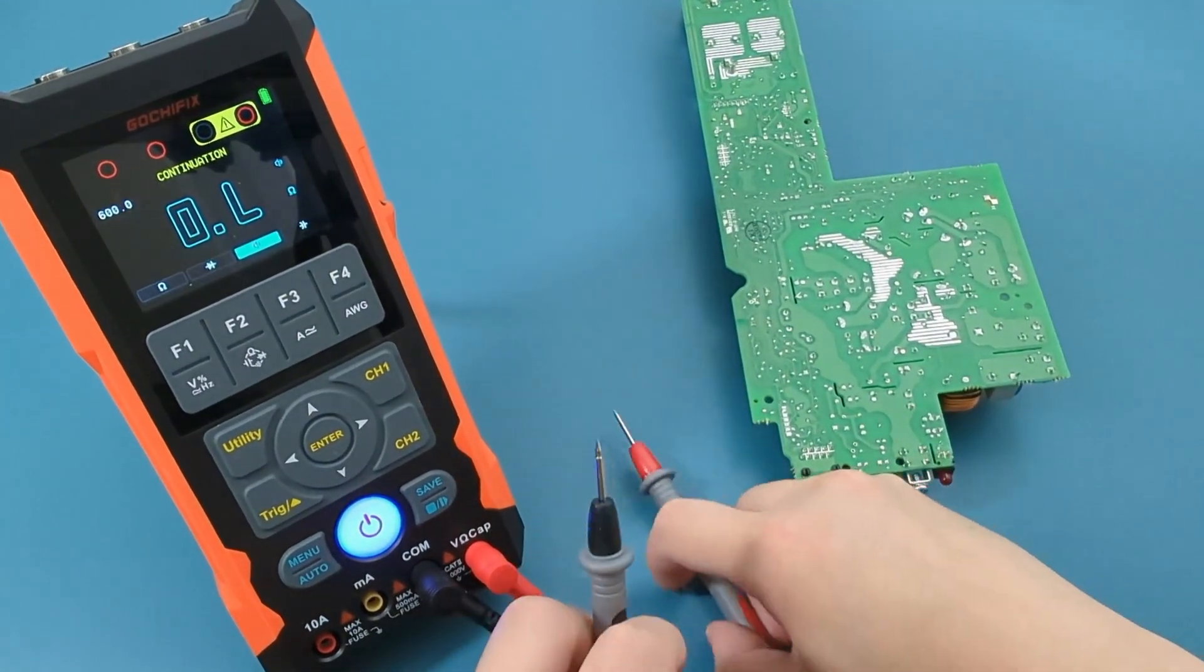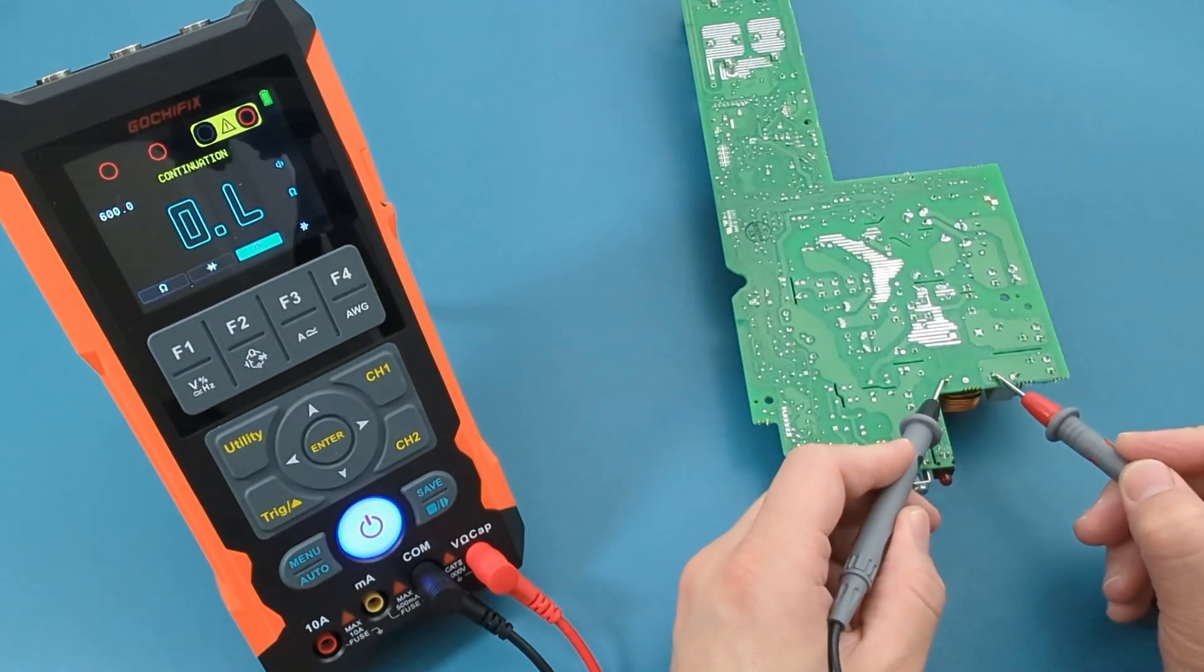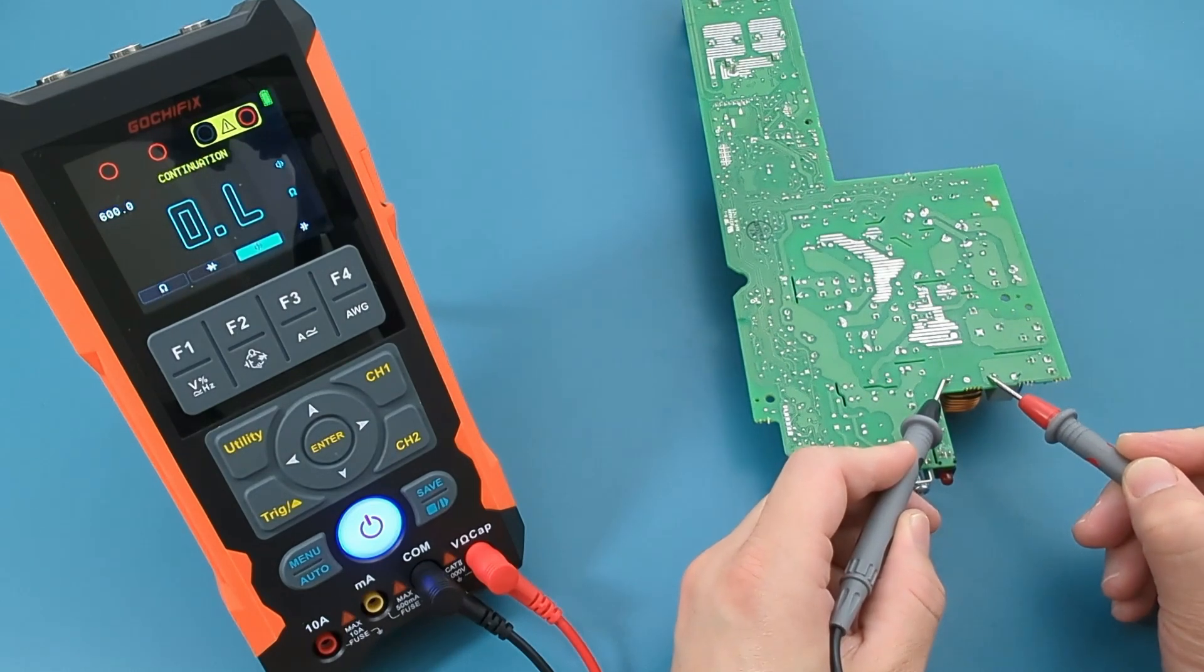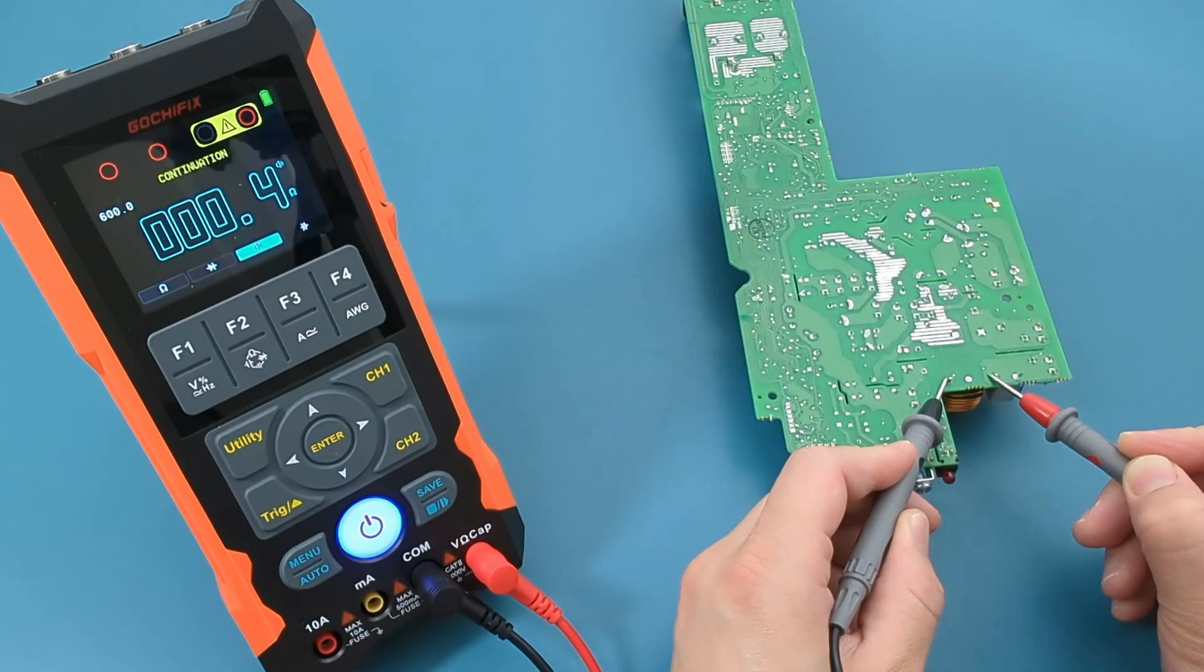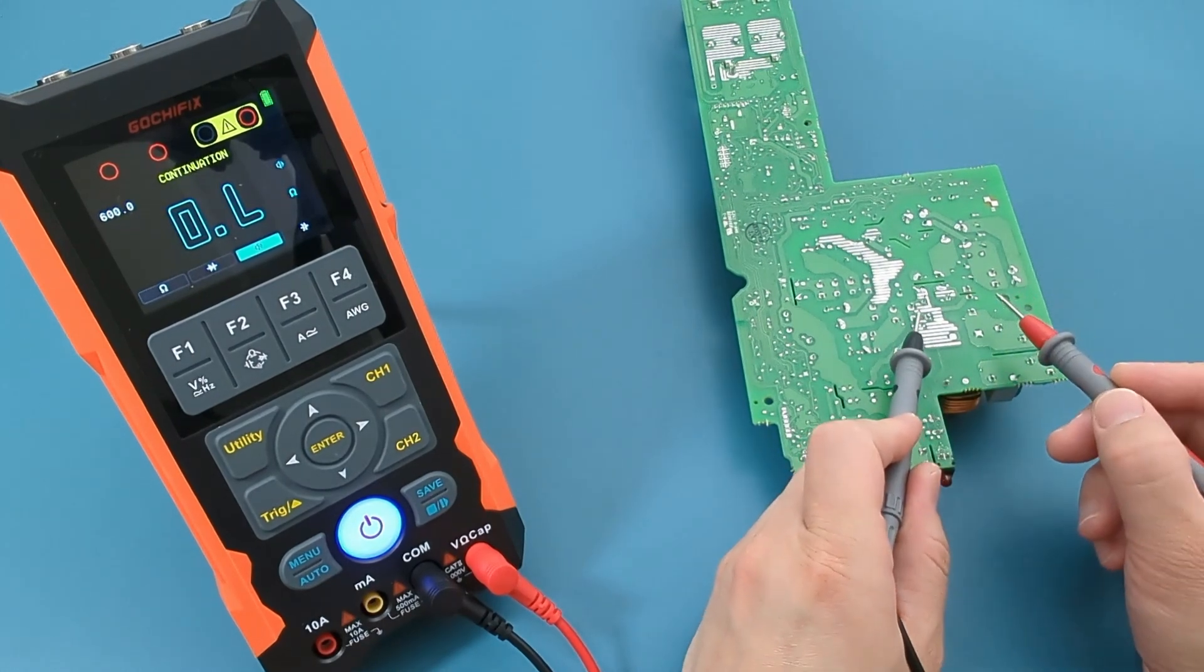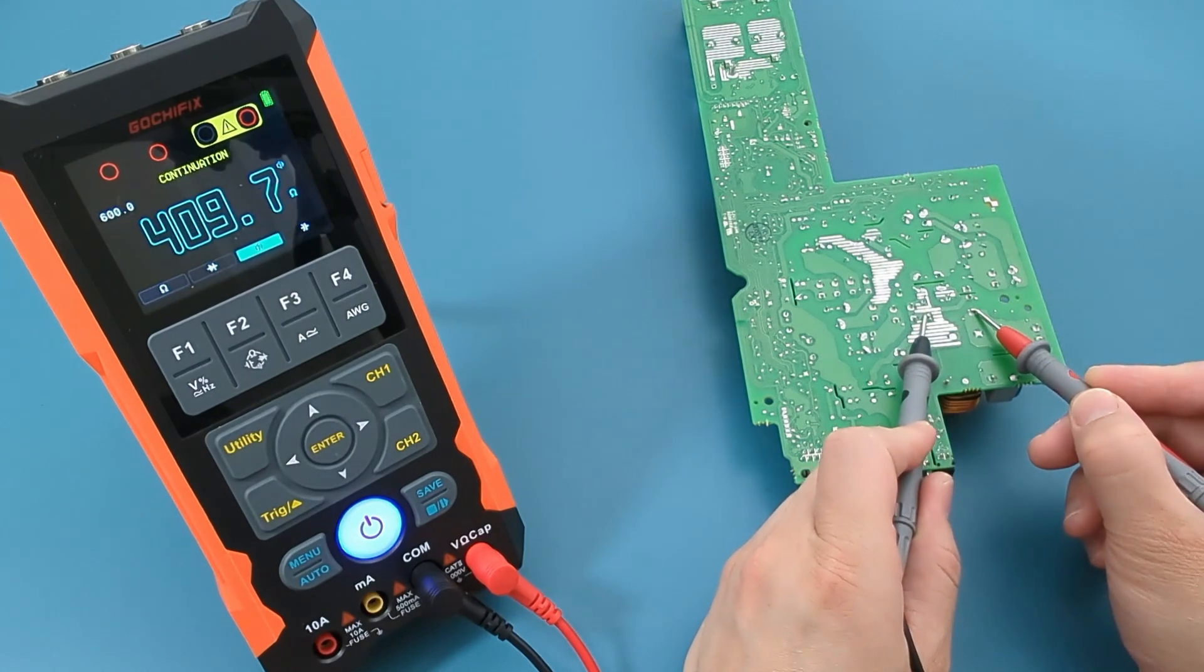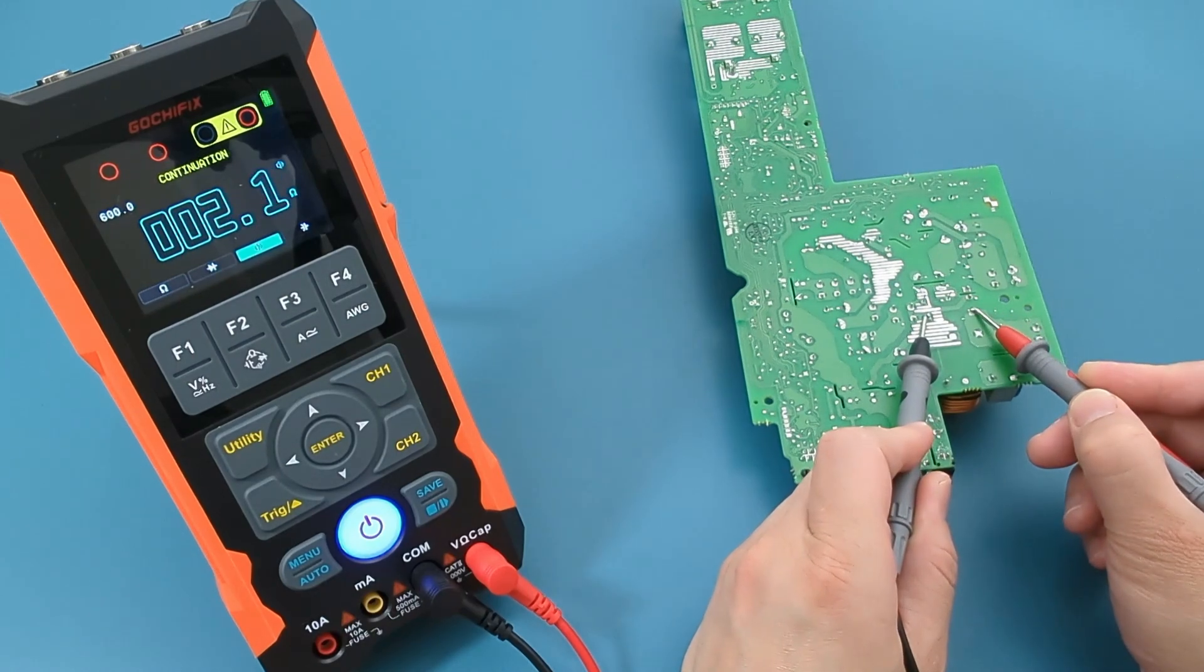Place the probes on the front two terminals. There is a beep and the resistance is low, so this is a good sign. Now place the probes on the back two terminals. This inductor is good.